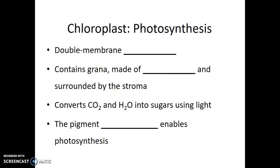In contrast, chloroplasts, which are the next type of energy organelle, are only found in plant cells and certain protist cells — only in photosynthetic organisms. Just like the mitochondria, they are a double membrane organelle. When we look at the structure within the chloroplasts, we see these stacks of green discs. The stack of discs is known as a granum, or plural, grana. They are made of thylakoids, which are the names of the individual green discs, and they're surrounded by a thick fluid filling of the chloroplast known as stroma.